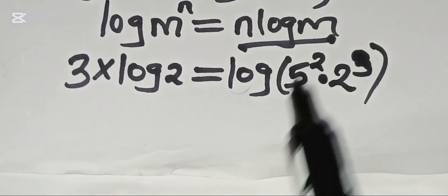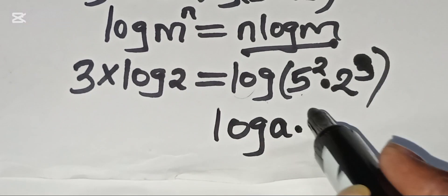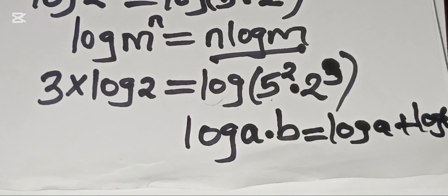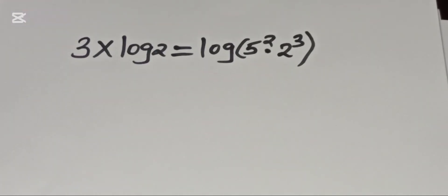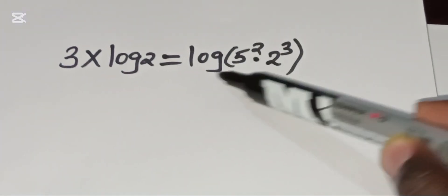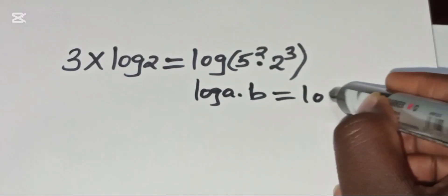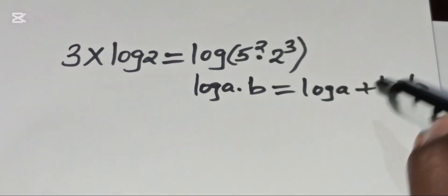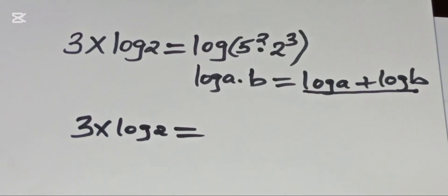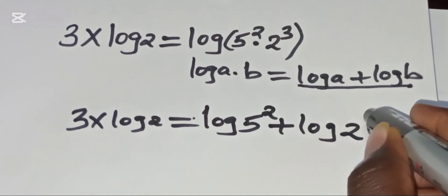The right side, log of 5 squared times 2 raised to the power 3, is in the form log(a × b), which we can write as log a plus log b. Applying this property, 3x·log 2 equals log of 5 raised to the power 2 plus log of 2 raised to the power 3.